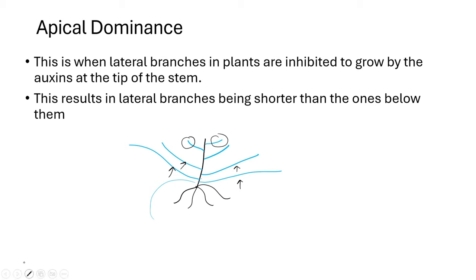What actually happens is that auxins are produced at the tip of the stem. During apical dominance, the auxins produced at the tip of the stem inhibit the growth of the lateral branches — the branches at the sides of the stem near the top. So they inhibit growth of the branches near the tip, resulting in lateral branches being shorter than the ones below.